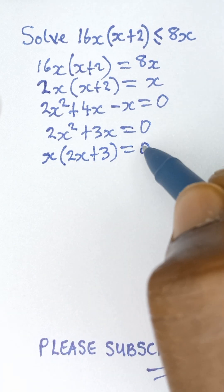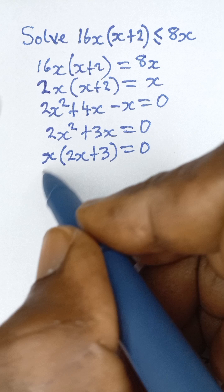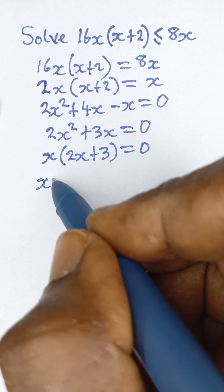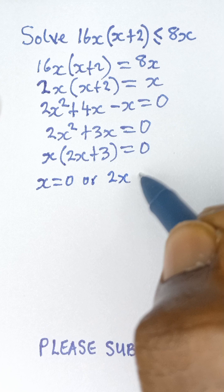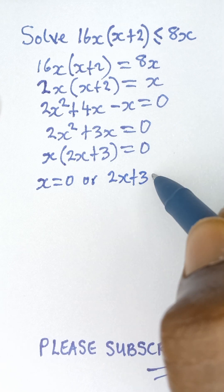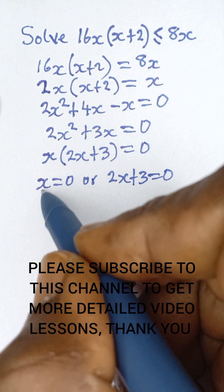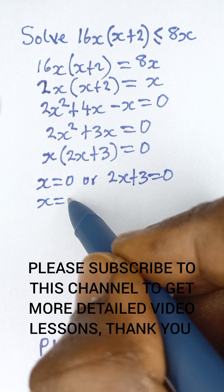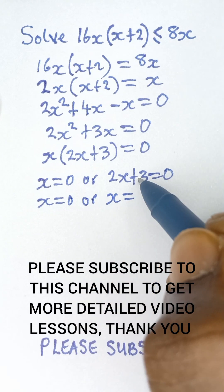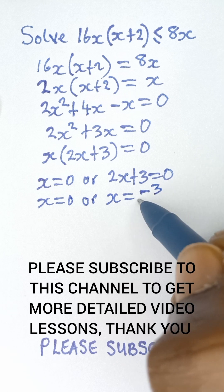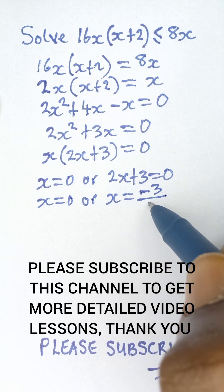Now I have two answers: either x = 0, or 2x+3 = 0. This second one gives me x = 0 or x = -3/2, when the 3 goes to that side it becomes negative 3 divided by 2.